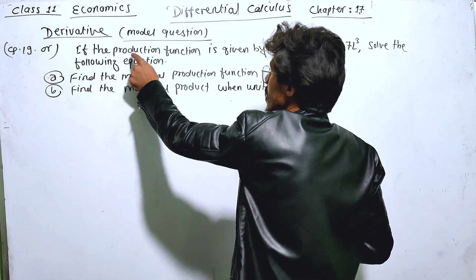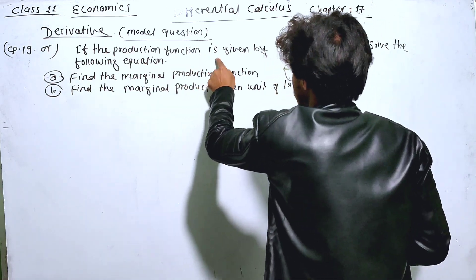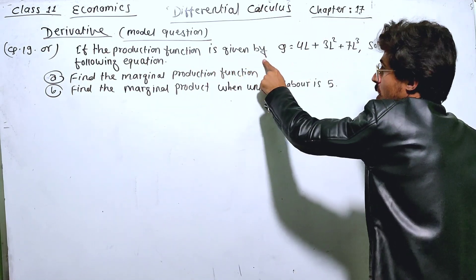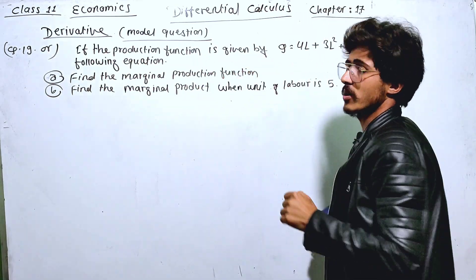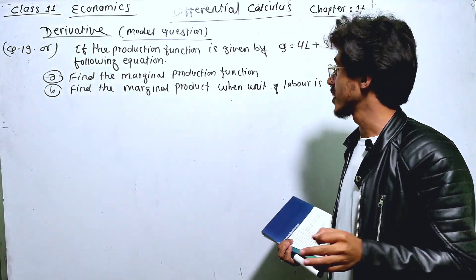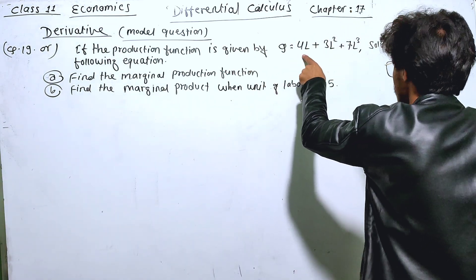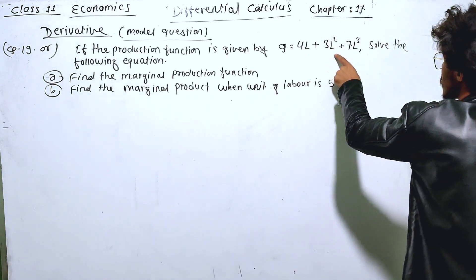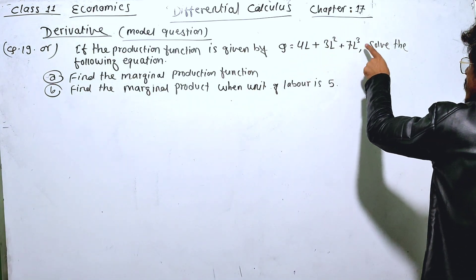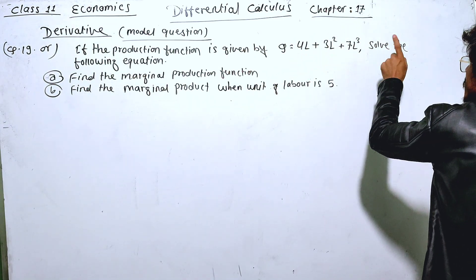If the production function is given by Q is equal to 4L plus 3L squared plus 7L cubed, we have to solve the following.